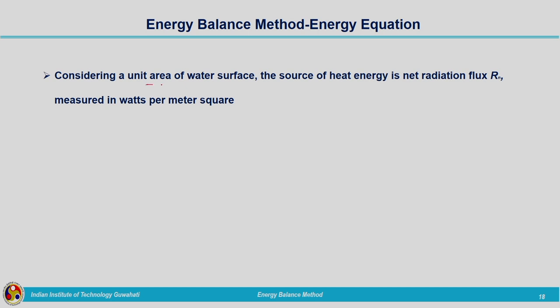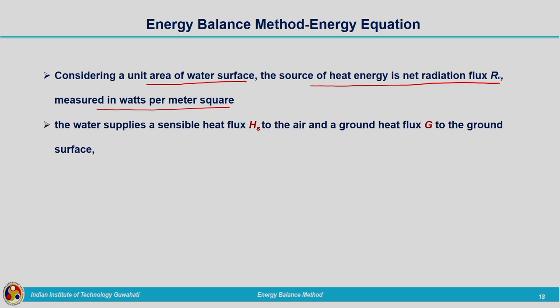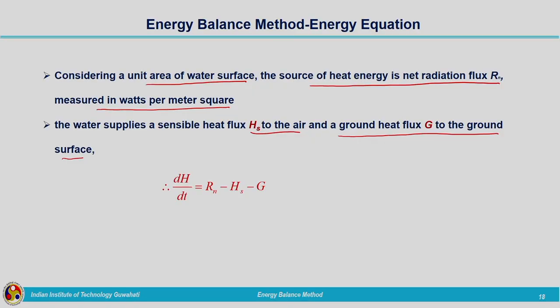Considering unit area of water surface, the source of heat energy is net radiation flux rn, measured in watts per meter square. The water supplies a sensible heat flux hs to the air and a ground heat flux g to the ground surface. So we can write: dH/dt equals rn minus hs minus g. The net heat energy present is rn minus hs minus g; other than this, there is no heat transfer taking place across the pan boundaries.